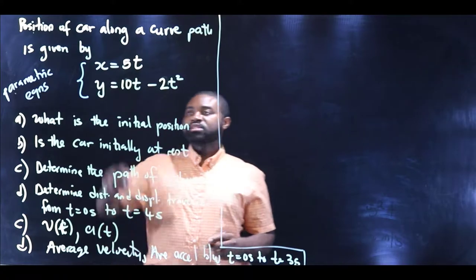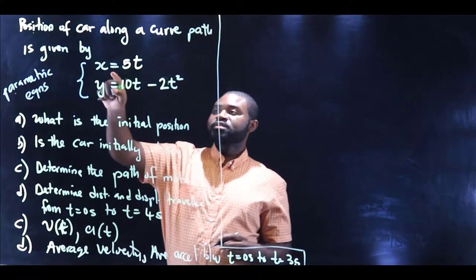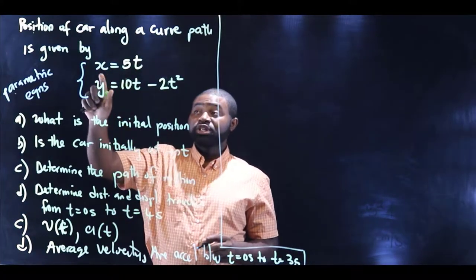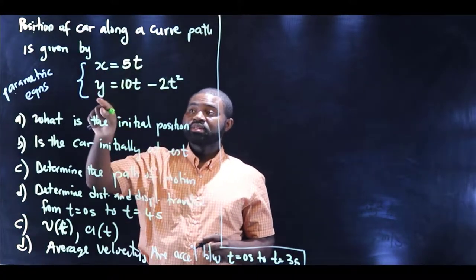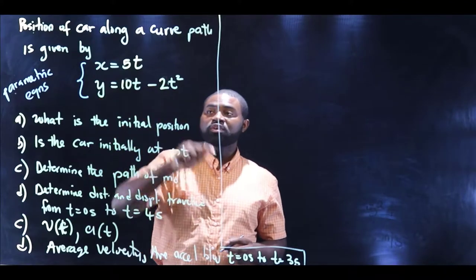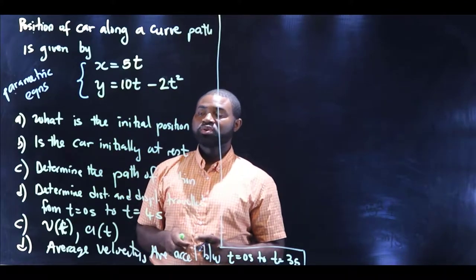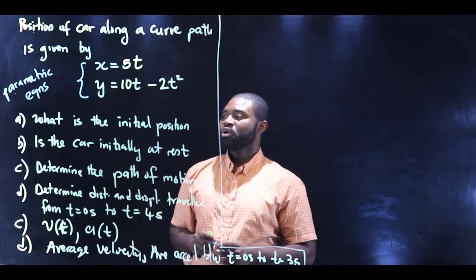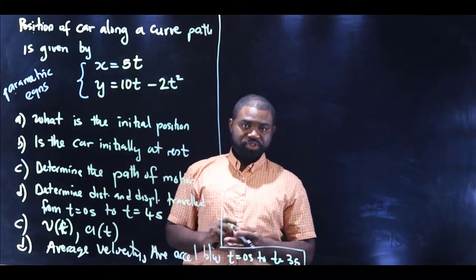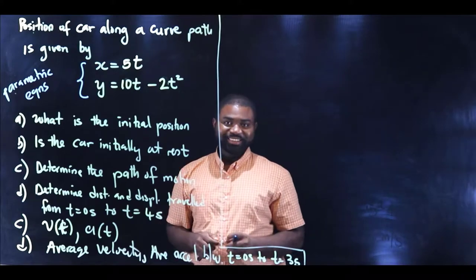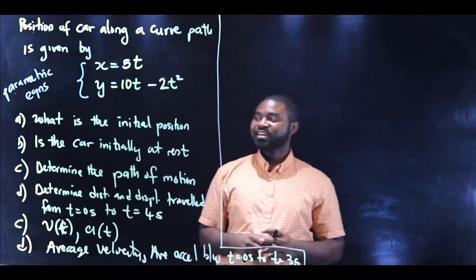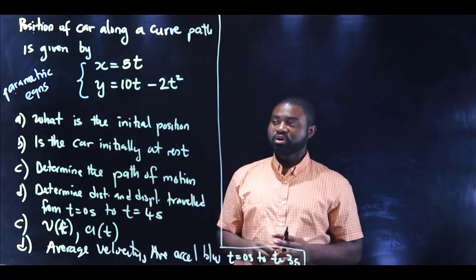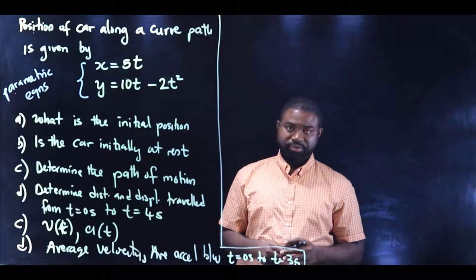This defines how the position along the x axis changes, and this defines how the position along the y axis changes. So the very first question is: what is the initial position of the car?